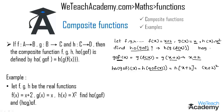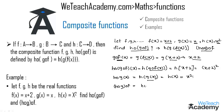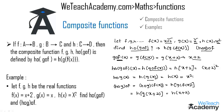Now let us find h∘g∘f by first computing h∘g(x) = h(g(x)). Since g(x) = √x, we write h(√x) = (√x)² = x. Then for h∘g∘f(x) = h∘g(f(x)) = h(g(f(x))). Since f(x) = x + 2, we get h(g(x + 2)) = h(√(x + 2)), and replacing x with √(x + 2) in h(x) = x² gives (x + 2).